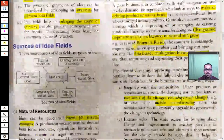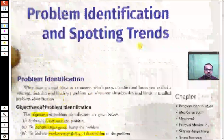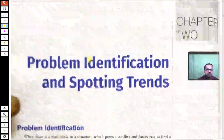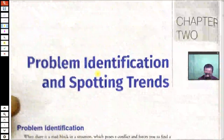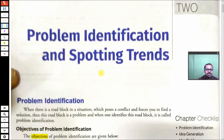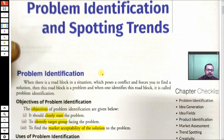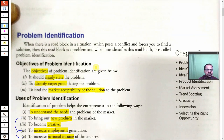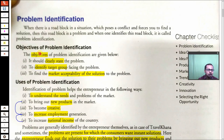Good morning students. We are going to start with Chapter 2, which is about problem identification and spotting trends. In any business, we know there are problems, and without problems a business will not grow or survive. Business is essentially about solving problems, so problem identification is very important. Many businesses shut down because they were not able to identify the problem and hence could not solve it.